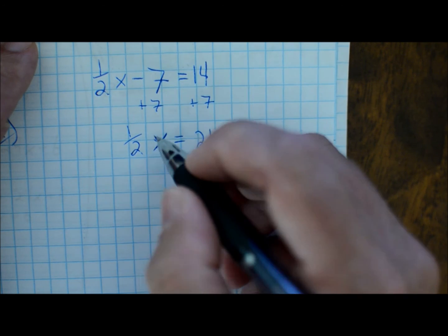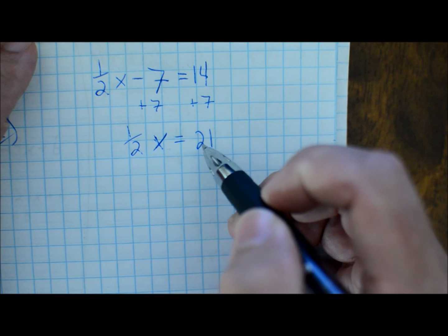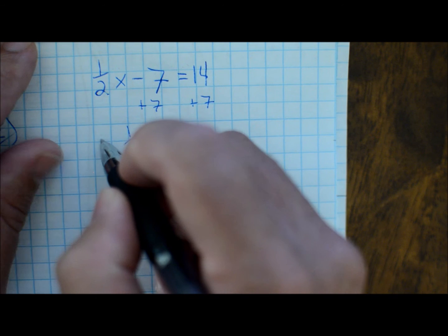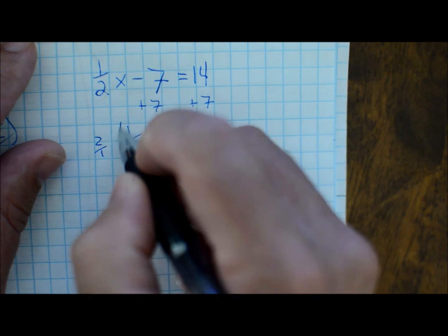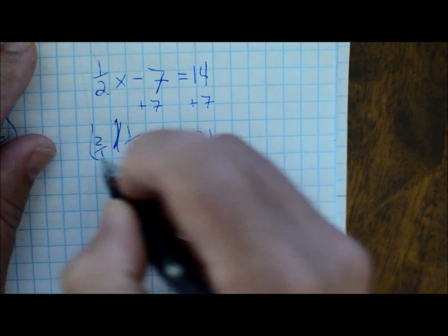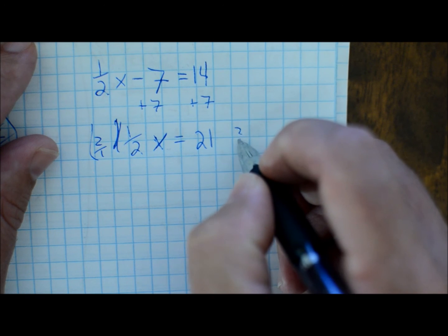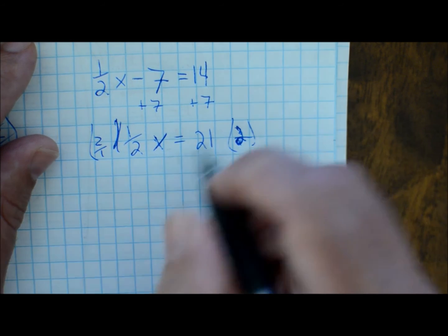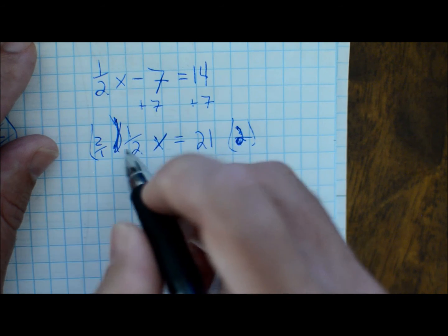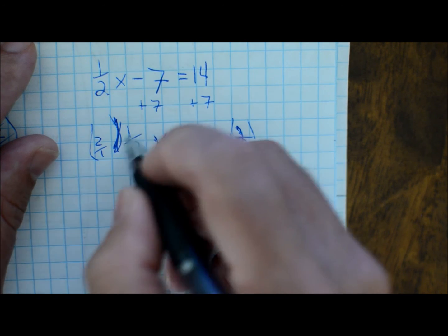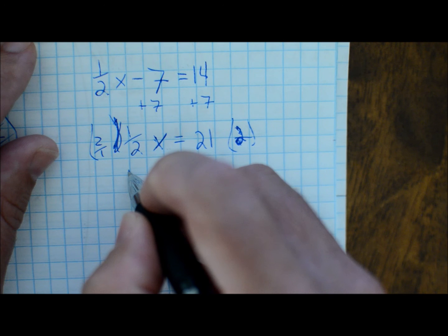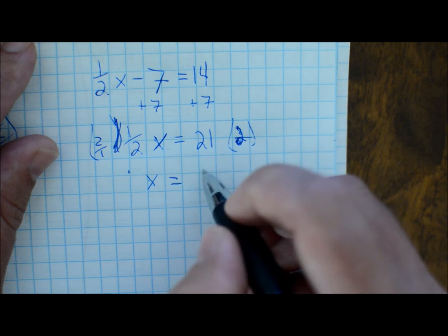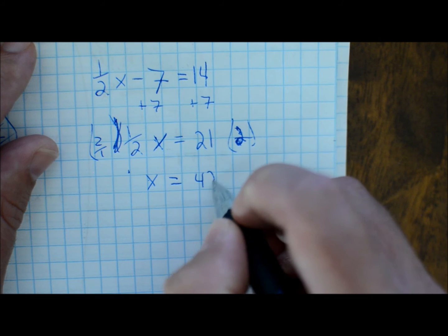Well, I mean, you can just intuitively say, well, what is 21 one half of? Or, you can multiply both sides by 2 over 1, or just 2, whatever, same thing. And that becomes a 1. So, x is equal to 21 times 2 is 42.